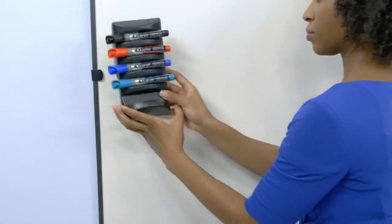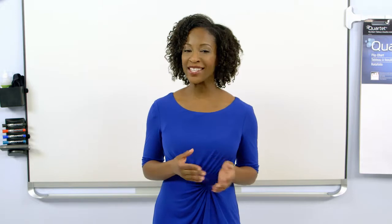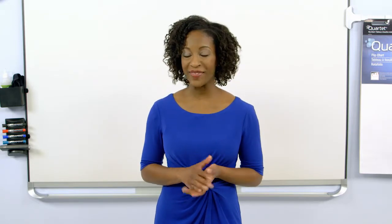Notches in the Prestige 2 board frame allow the Marker Caddy to fit securely on or off the whiteboard surface on either the left or right side of the board at any height.